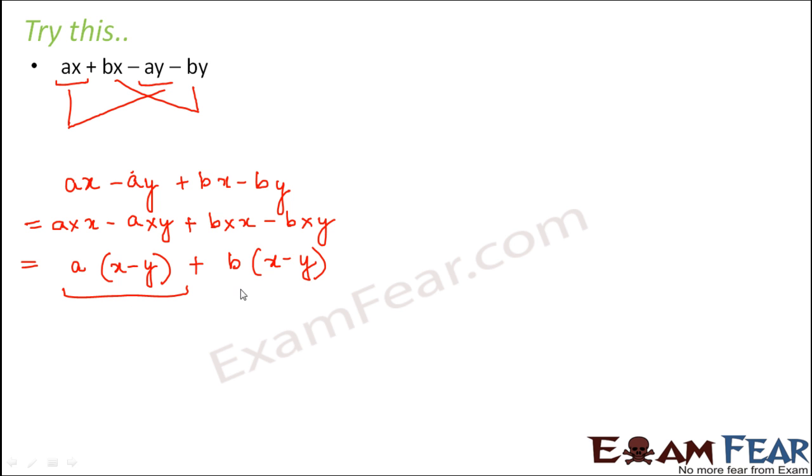Now you compare this term with this term. What do you have in common? You have x minus y in common. So what are you left with? You are left with a plus b. So x minus y into a plus b. This is the factor form of the given expression.